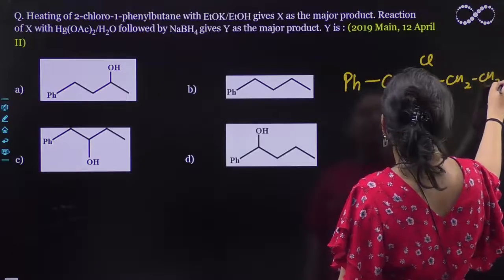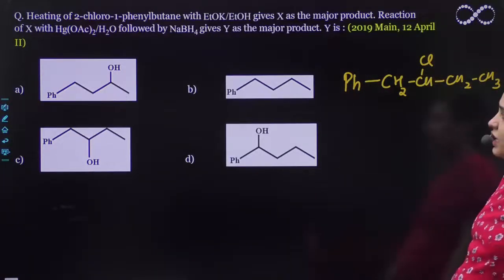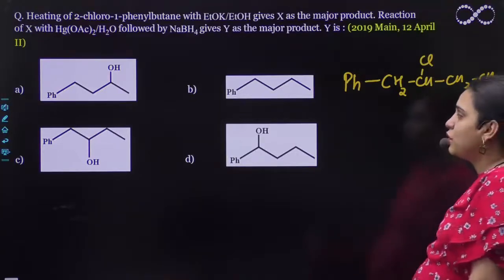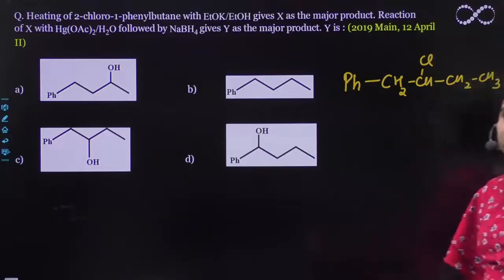If we have heated it in potassium ethoxide in the presence of ethanol, it will give you a major product. And then we have oxymercuration-demercuration.